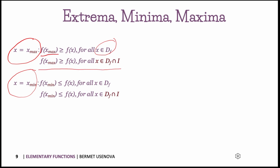Local minima occur on a certain interval i, where a point has the maximum or minimum value within that interval. The global minimum is the minimum possible value for the entire function, while the local minimum is the minimum value on a specific interval of interest.